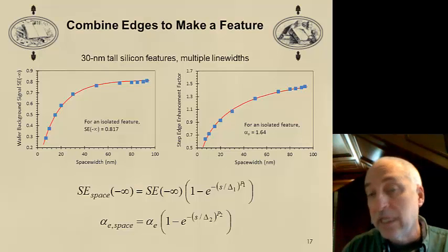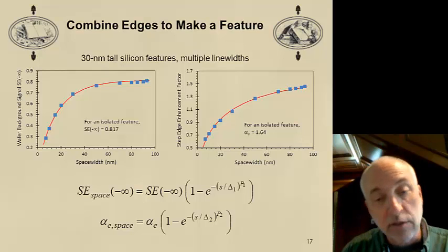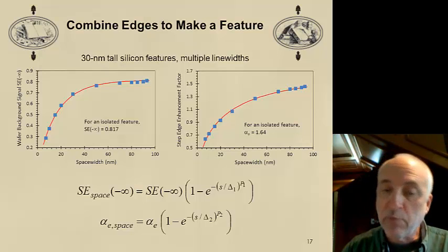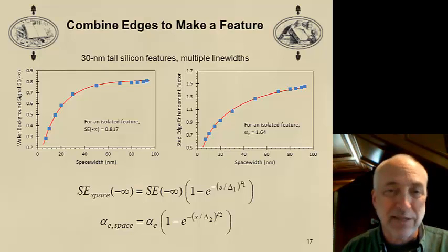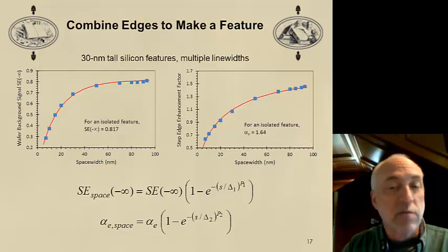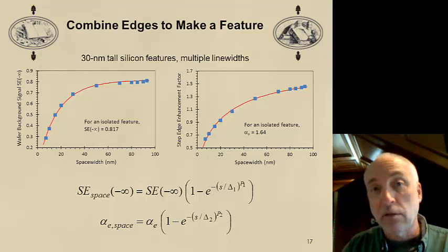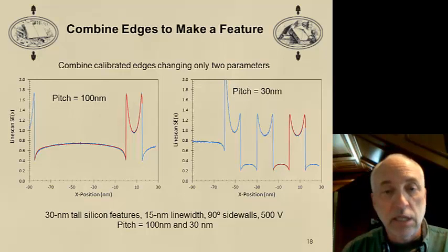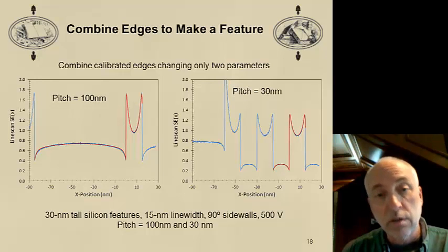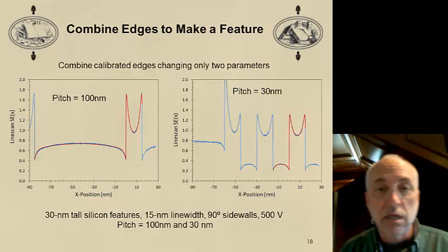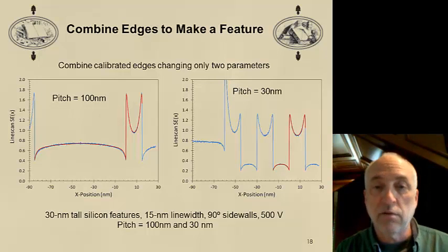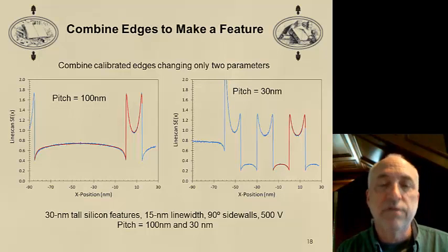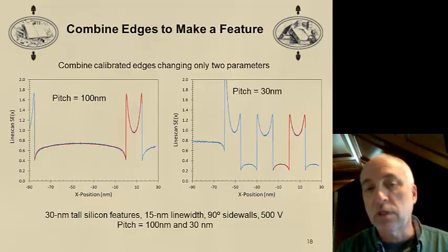The result now is a feature model that can take into account different step heights, and line widths, and pitches, and sidewall angles - many of the things that we expect to vary from feature to feature as we're measuring them in a scanning electron microscope. Now that we have a completed model that takes all these things into account, let's try it out. Here are the fits to the Monte Carlo results when we include this two-parameter change that is dependent upon the space width. You see that we get very good fits, and we tried this for a large number of feature sizes and pitches, and we got results close to this for almost all of the cases.